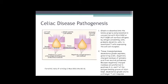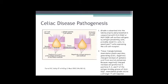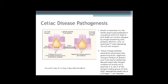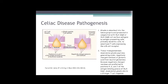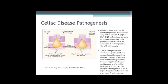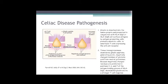In the tissue, transglutaminase deaminates the gliadin peptides. You get negatively charged residues of glutamic acid and you get a change in the T cell response by the change in the tissue transglutaminase.